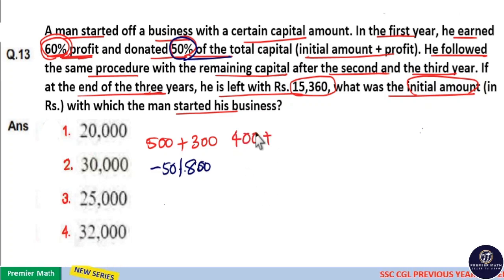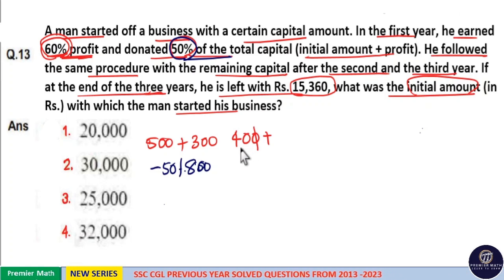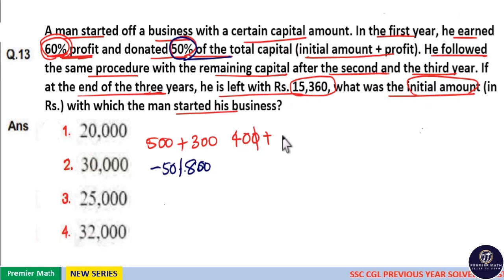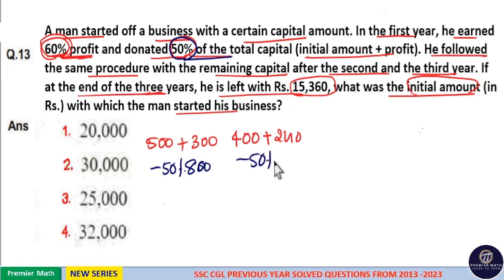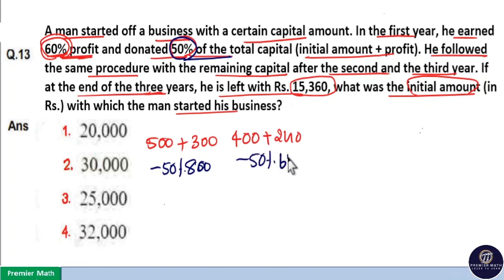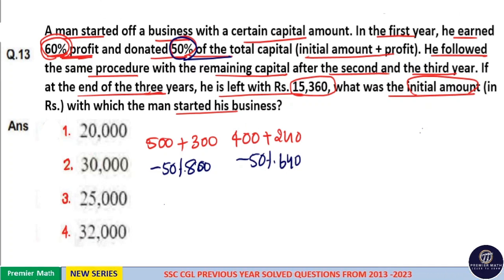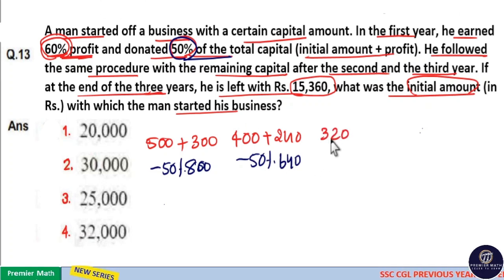Again, he got 60% of 400. 10% of 400 is 40, so 60% is 6 × 40 = 240 rupees. He donated 50% of the total, which is 50% of 640. That is 320 rupees donated. Remaining is 320 rupees for the third year.